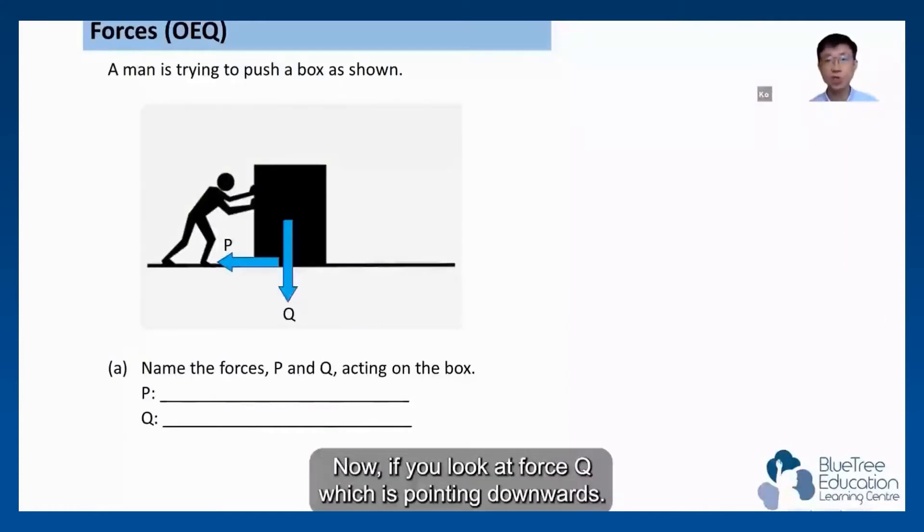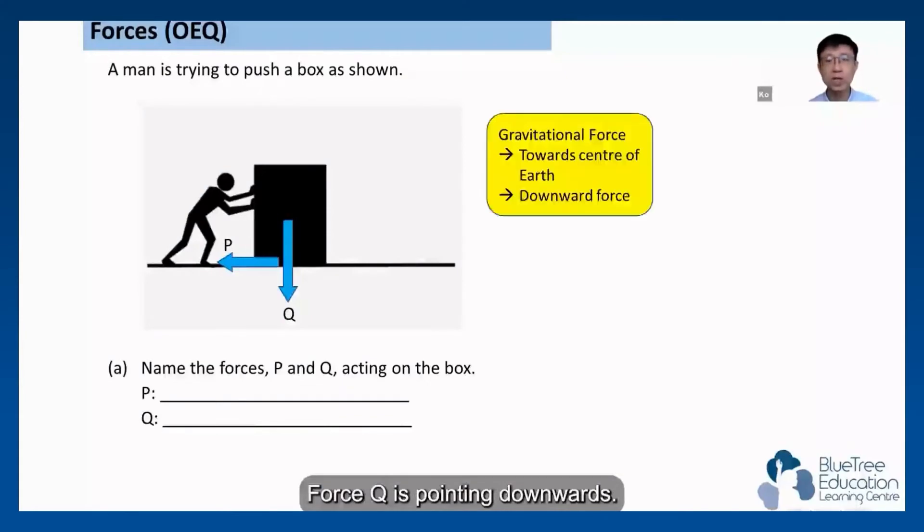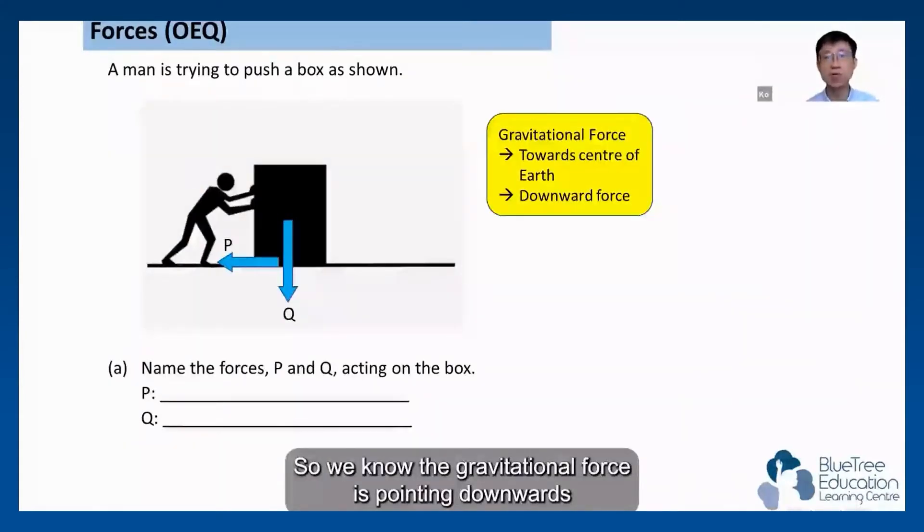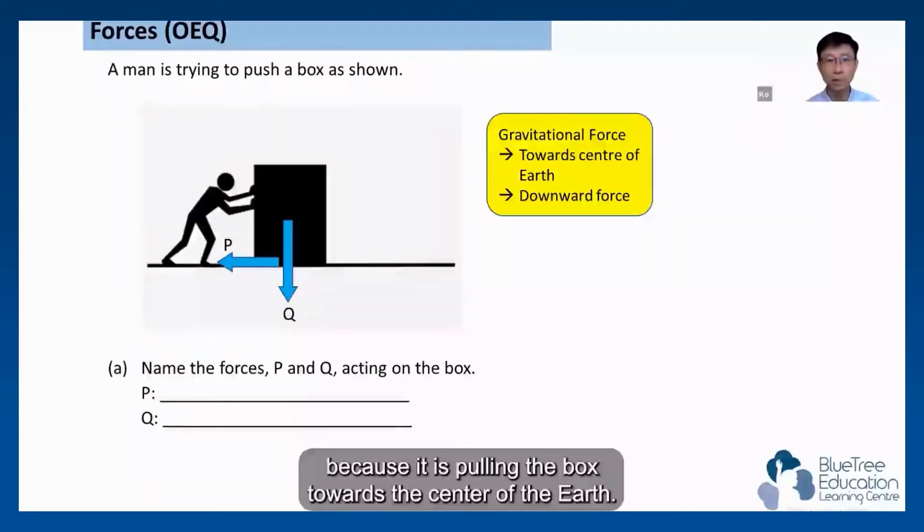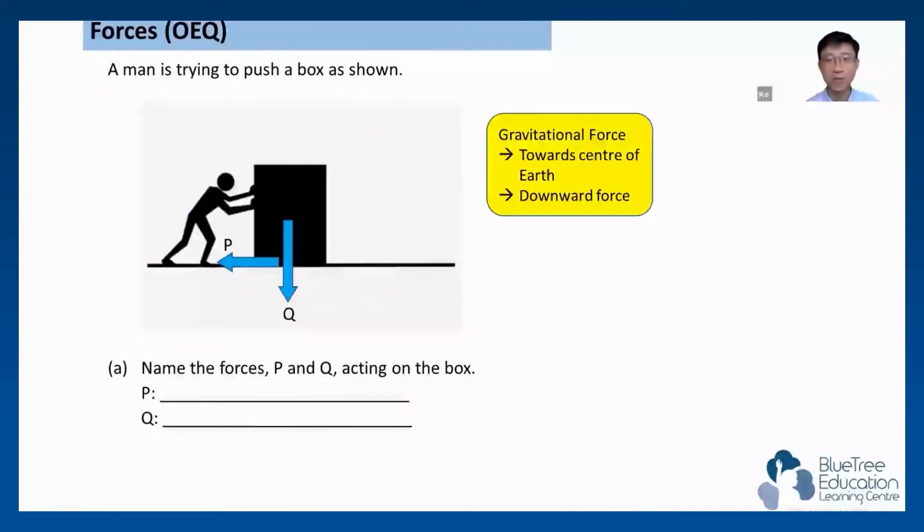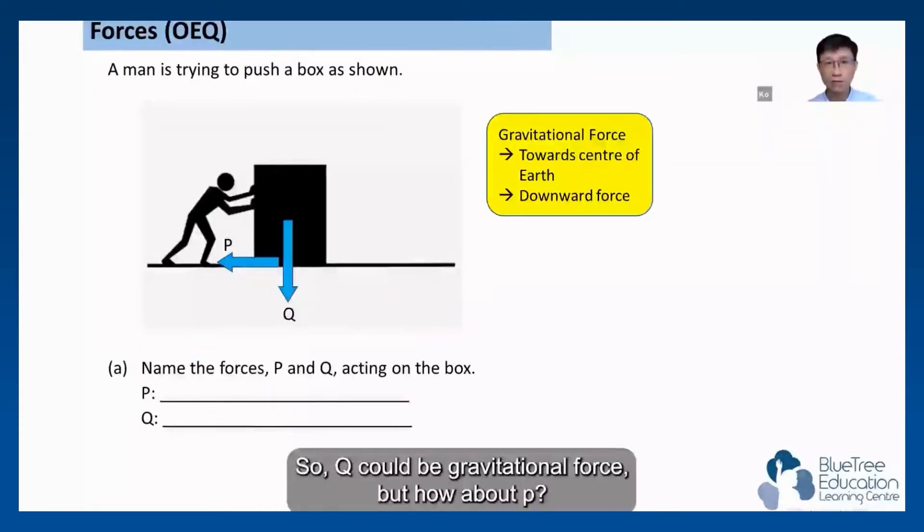If you look at force Q which is pointing downwards, so we know the gravitational force is pointing downwards because it is pulling the box towards the center of the earth. So Q could be gravitational force.